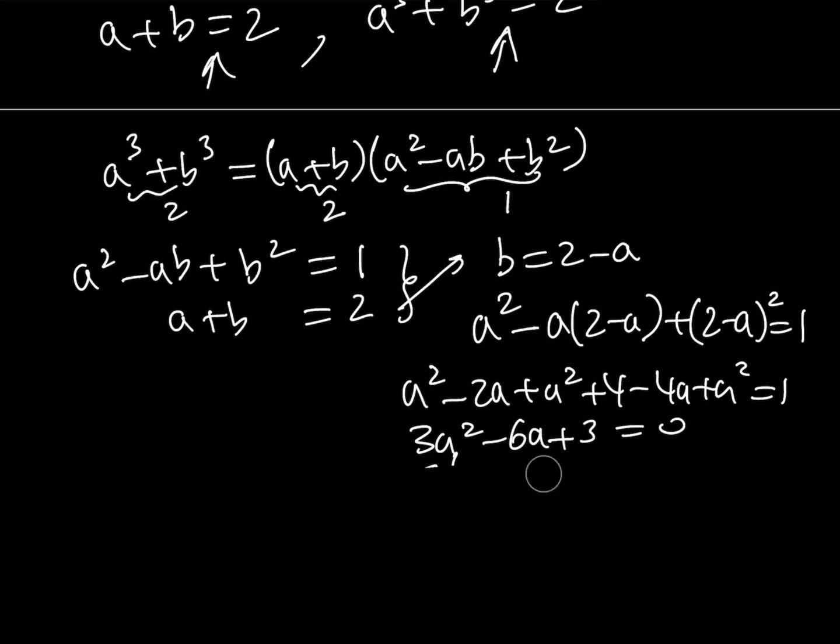Let me explain that step. From here we get 3 times (A² minus 2A plus 1) equals 0. And as you know, the expression inside the parentheses can be written as (A minus 1)². So, from here we get that A is equal to 1.